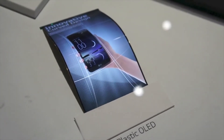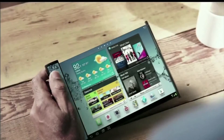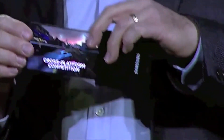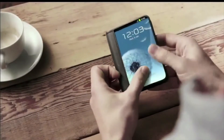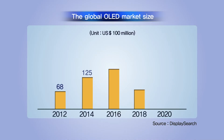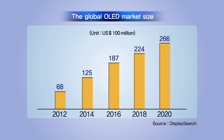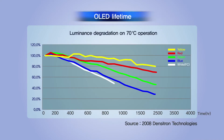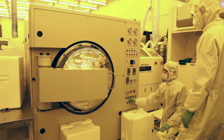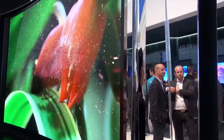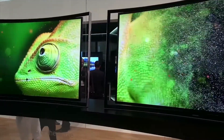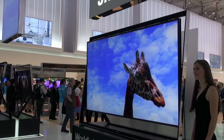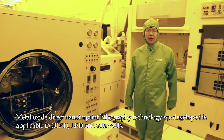The area where metal oxide direct nano imprint lithography can be put to practical use within the foreseeable future is OLED. As OLED has started to be used for mobile devices and TVs, its market is growing drastically, but securing product life is difficult. If we can improve luminance efficiency through metal oxide direct nano imprint lithography, there will be great far-reaching industrial impact as it can be used for TVs and monitors.